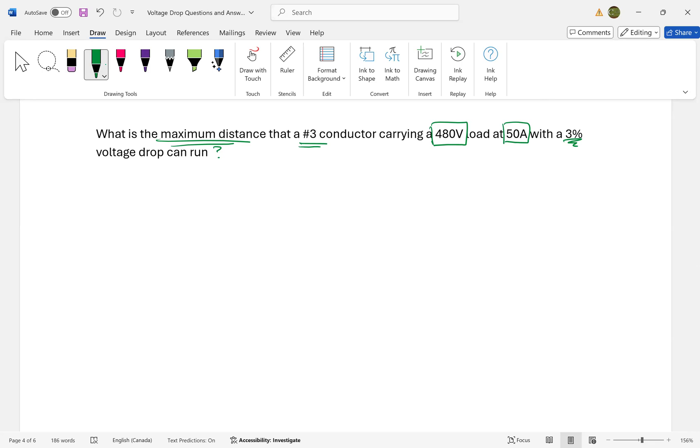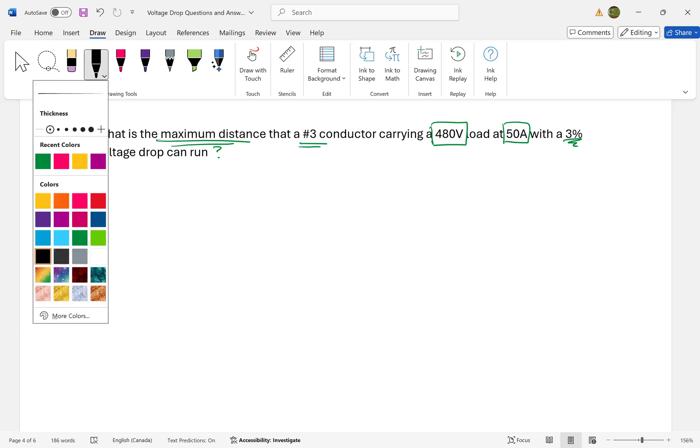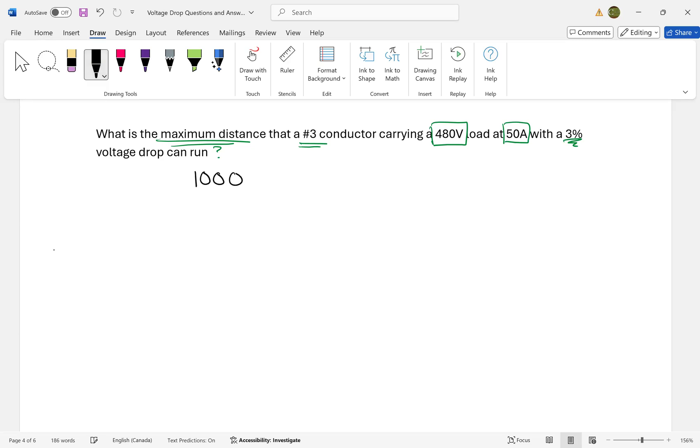This is a voltage drop question from the Canadian Electrical Code, Section 8. It refers to Table D3, where we have a relationship I like to describe with one formula. If you don't know this formula, please take a look at my videos where I describe it.